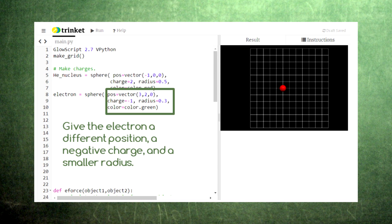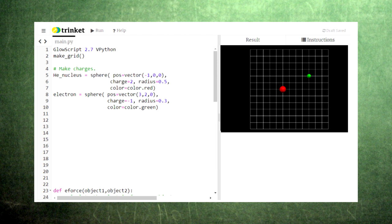Now let's repeat that process to create an electron. We need to give this electron a different position than the helium nucleus, because the electric force does not like it when two objects share the same location. Let's also give the electron a smaller charge and a smaller radius than the helium nucleus, just like in real life. Running the code again, we see both the helium nucleus and the electron.